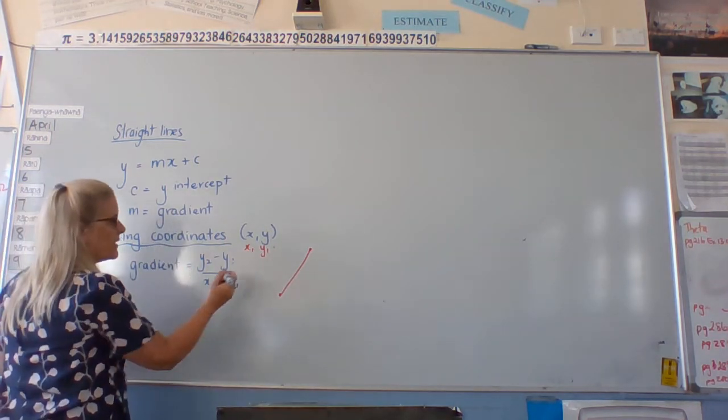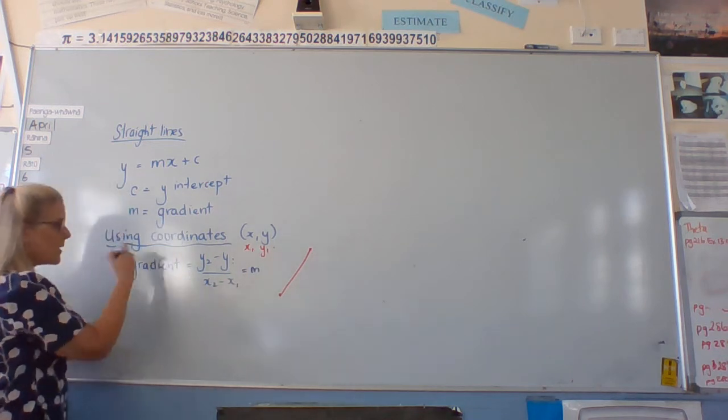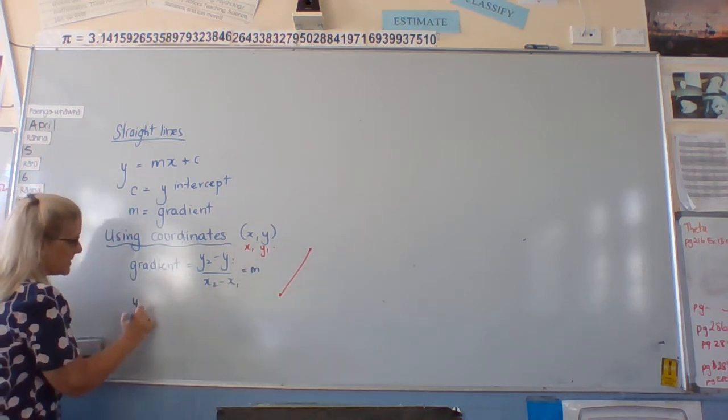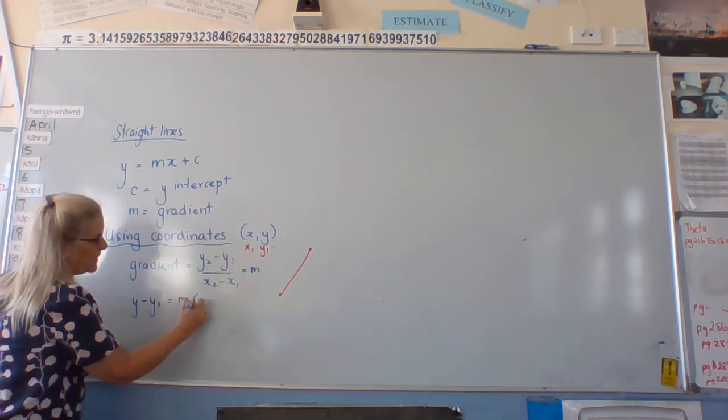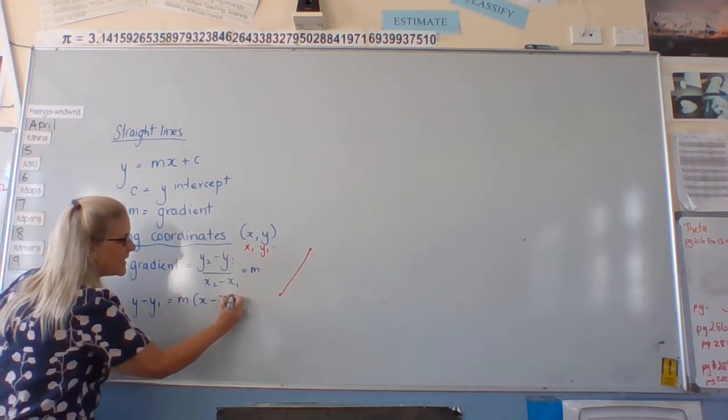Once we've got that, we still call it m, we can put it in a formula. That formula says that the y take away the first point is equal to the gradient x take away the second point.